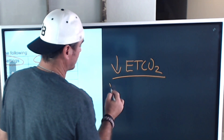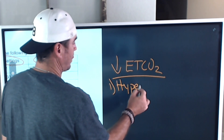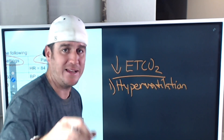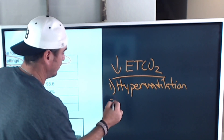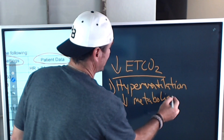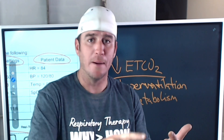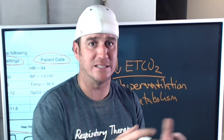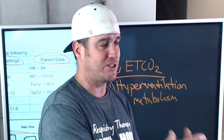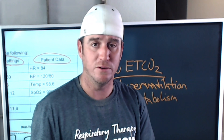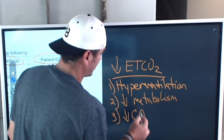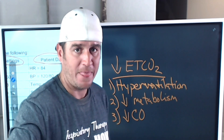There are only four causes of decreasing end-tidal CO2. Number one: hyperventilation — if your patient is hyperventilating, that might cause a decrease in end-tidal CO2. Number two: a decrease in metabolism — things like decreased temperature or decreased muscle activity will decrease metabolic rate, decrease oxygen consumption, and decrease CO2 production, resulting in a decrease in end-tidal CO2.